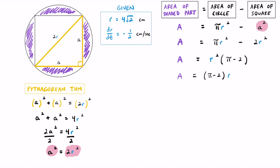Now it's time to take the derivative of both sides with respect to time. The left side gives us dA/dt, which is what we're solving for. On the right side, applying the power rule: bring down the exponent 2, multiply by the coefficient (π minus 2), reduce the power to r¹, and multiply by dr/dt.